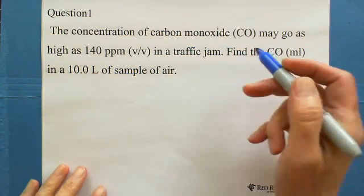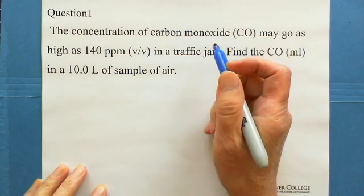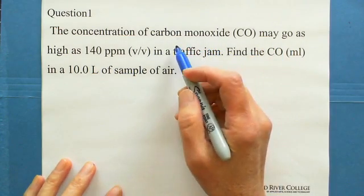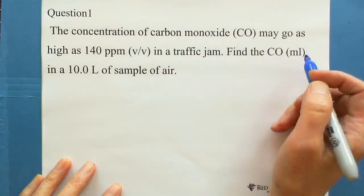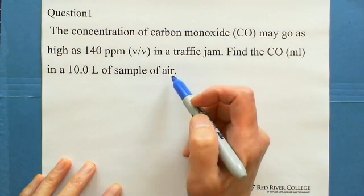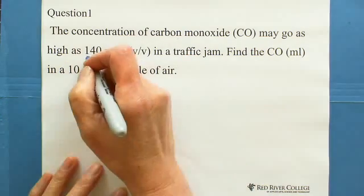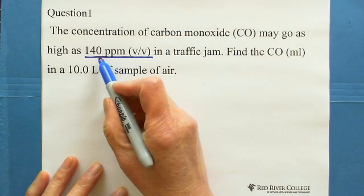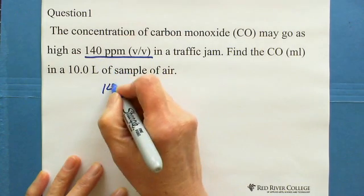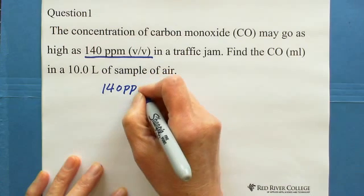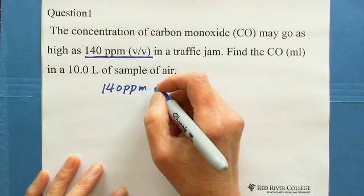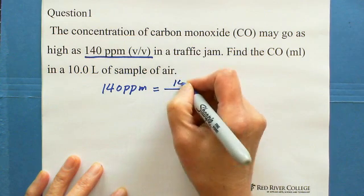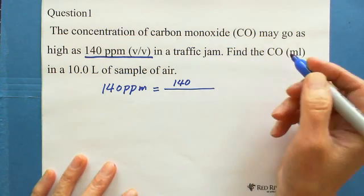First of all, this question is about carbon monoxide — the concentration of carbon monoxide in 10 liters of a sample of air. We are given 140 ppm volume to volume. So we start by writing 140 ppm, which is volume to volume, equals 140 volume.